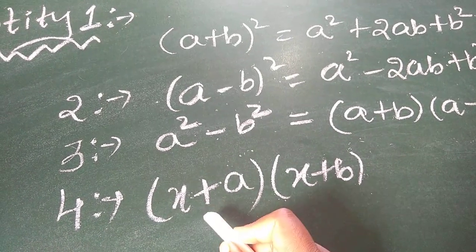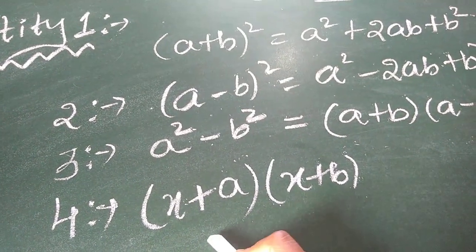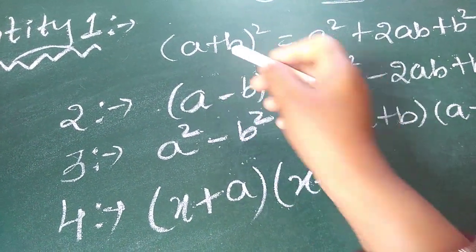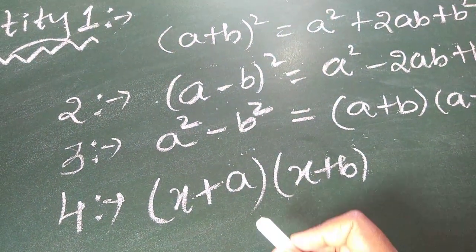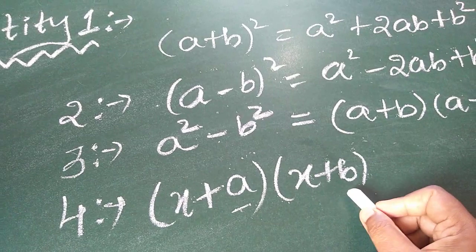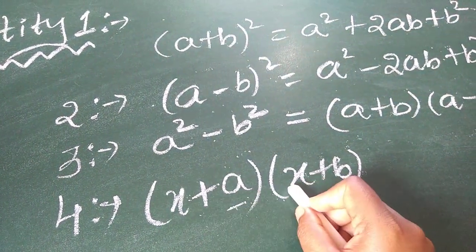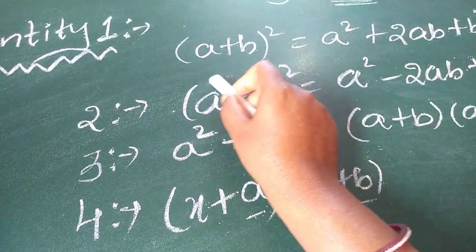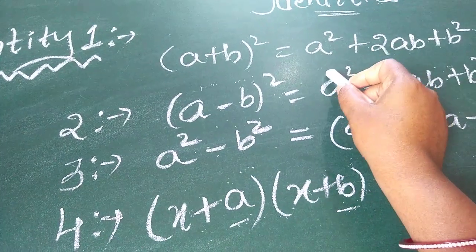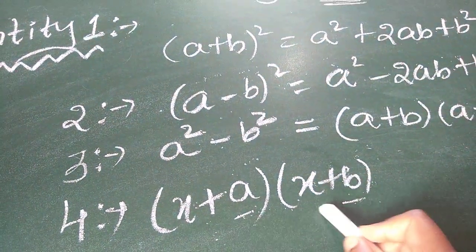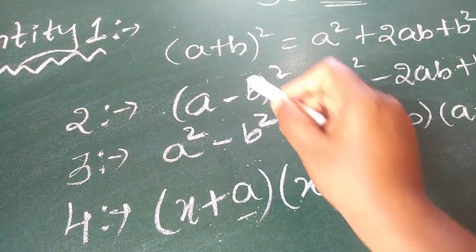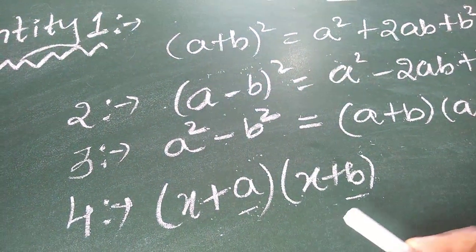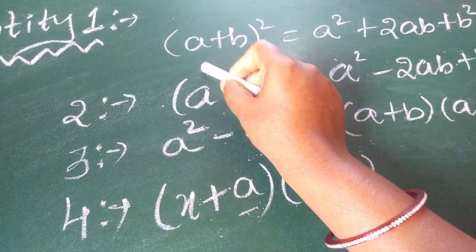My fourth identity is x plus a and x plus b. What is the difference between x plus a, x plus b and a plus b whole square? A plus b whole square can be written as a plus b into a plus b. But here it is x plus a and x plus b — there are three unknown terms: x, a, and b. Whereas in the first identity, there are only two unknown terms. We take the first identity when there are two unknown terms. When there are three unknown terms, a may be a constant also, and b may be a constant also. Any one variable will be there and another may be a constant.